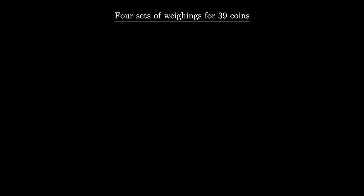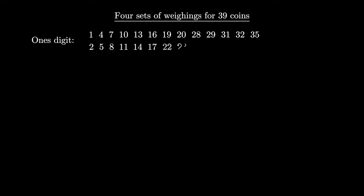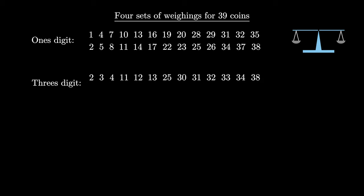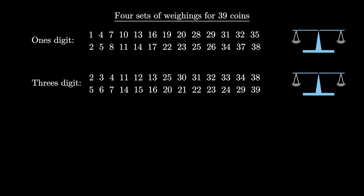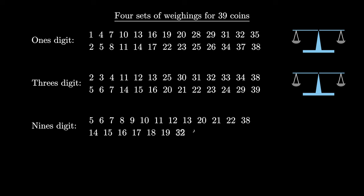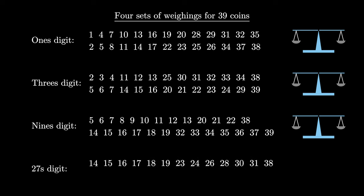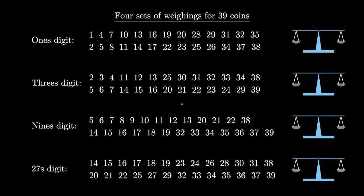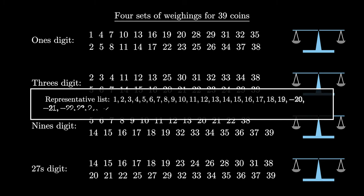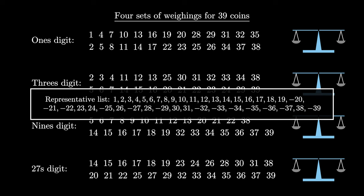We then use each of the four positions to create four sets of weighings for the 39 coins. In each position, numbers with a digit of 1 go on the left side of the scale and numbers with a digit of negative 1 go on the right. We also need to remember our list of 13 negative representatives to determine whether a detected coin is heavier or lighter than the rest.